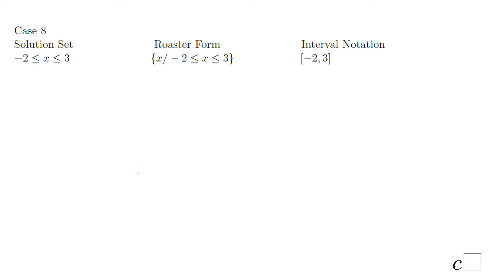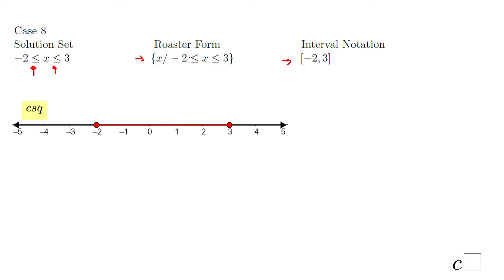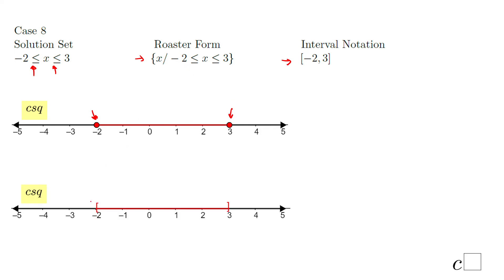Very similar to the previous one, the only difference is we have the equal sign: negative 2 less or equals x, less or equals 3. Roster form: x when negative 2 is less or equals x, which is less or equals 3. The interval notation uses brackets, because we have the equal sign. In the graphical approach, you see full dots on both ends, or brackets, and shaded between negative 2 and 3.